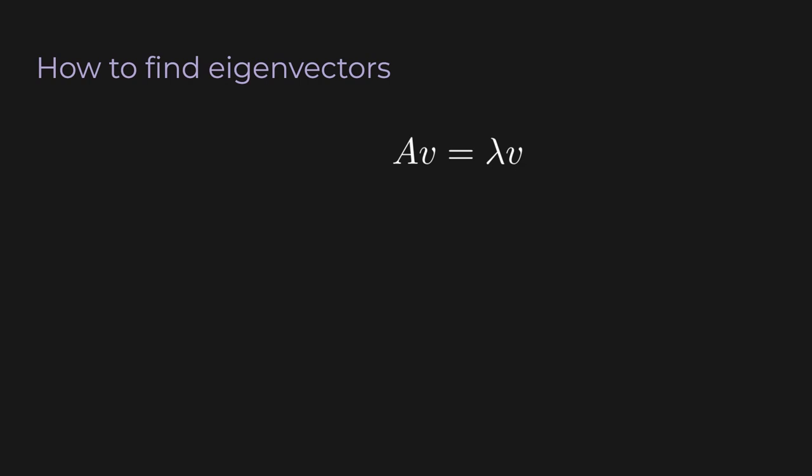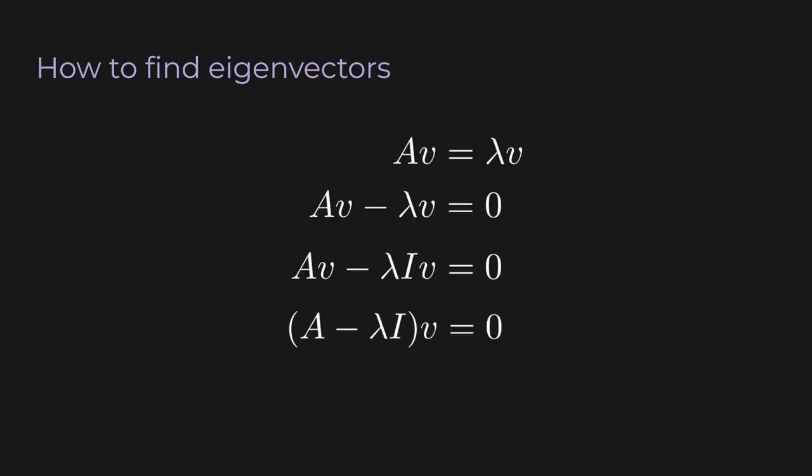It all starts from the definition of an eigenvector again. Let's move this around. Let's first move lambda v to the other side — the right side is now the zero vector. Now I can put an identity matrix in front of any vector, because that's just multiplying by one. Then I can factor out the v. So A minus lambda I is itself a square matrix, the same size as A. This equation says that v is in the null space of A minus lambda I, and any vector in the null space of A minus lambda I is an eigenvector of A.